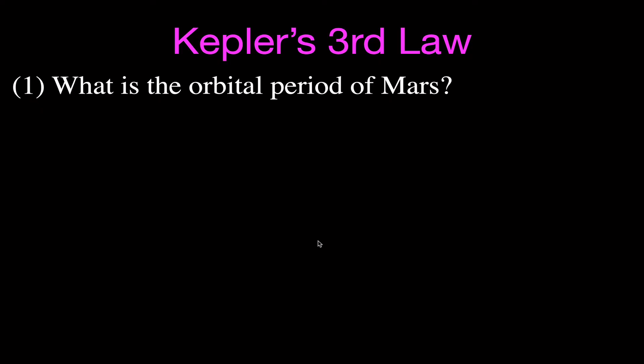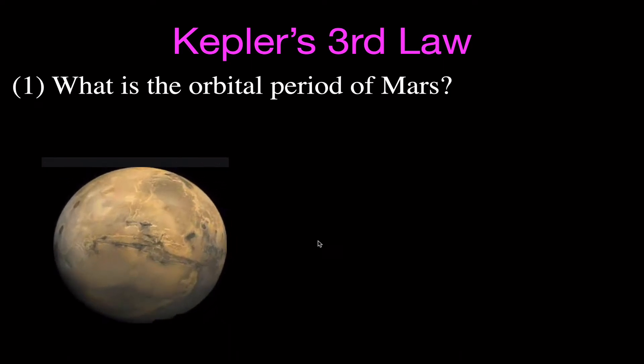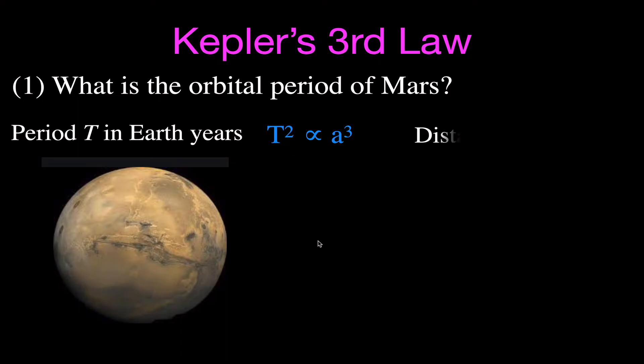Example one: what is the orbital period of Mars — the time it takes to go once around the Sun? We're going to use Kepler's Third Law in the form T squared is proportional to A cubed. Because we're talking about our solar system, if the period is given in years and the semi-major axis in astronomical units, we can simplify to T squared equals A cubed. We want to figure out T.